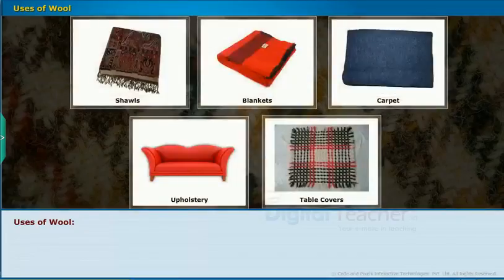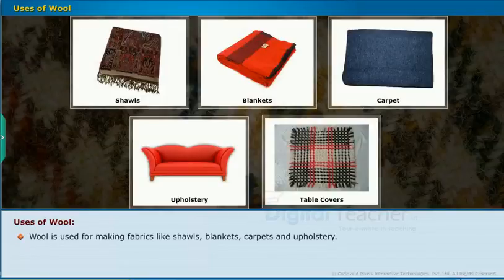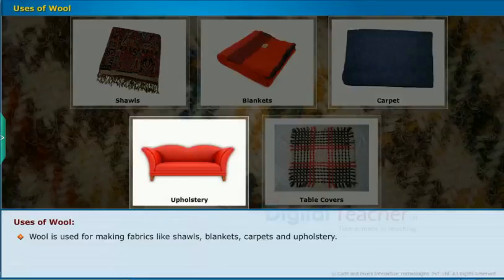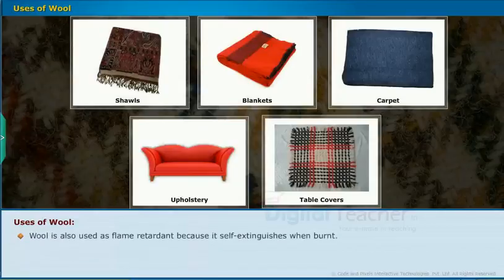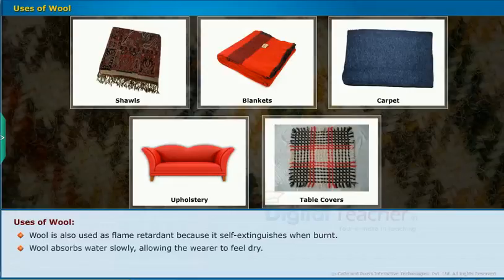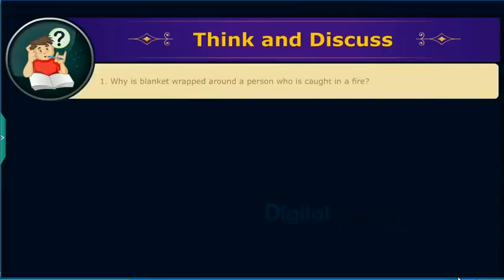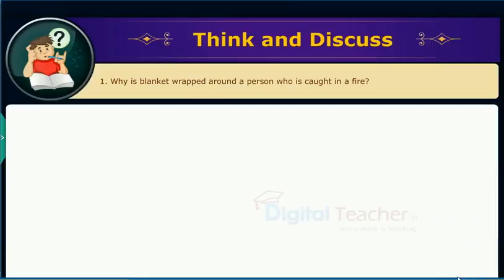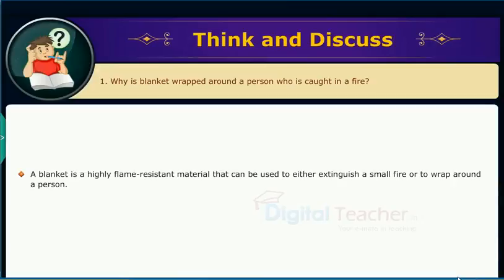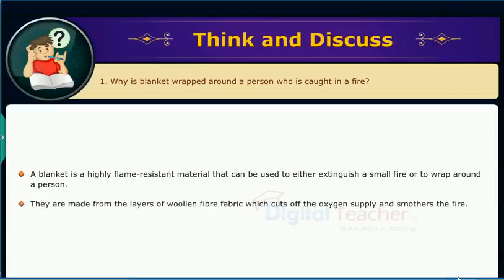Wool is used for making fabrics like shawls, blankets, carpets, and upholstery. Wool felt is used for table covers. Wool is also used as a flame retardant because it self-extinguishes when burnt, and it absorbs water slowly, allowing the wearer to feel dry. A blanket is a highly flame-resistant material that can be used to extinguish a small fire or wrap around a person, as layers of woolen fiber fabric cut off the oxygen supply and smother the fire.